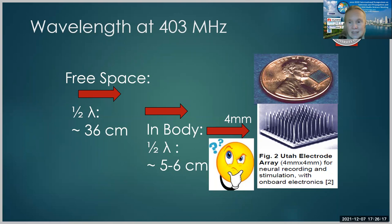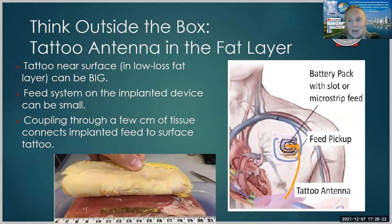So this actually requires thinking outside the box. In fact, thinking outside of the battery pack box. One example of this is something that we have proposed where you can do a tattoo antenna in the fat layer of the body. You could tattoo conductive nanoparticles near the surface in the low loss fat layer, and the tattoo can be quite large. The feed system on the implanted device could be very small, perhaps even four millimeters, and you could couple through a few centimeters of tissue to connect the implanted feed to the surface tattoo.